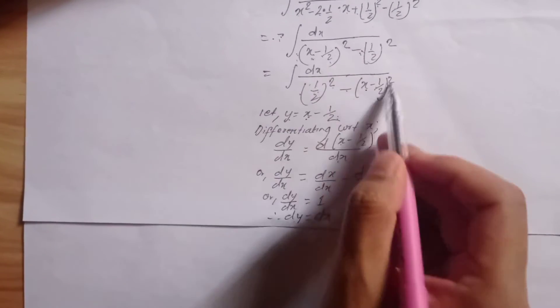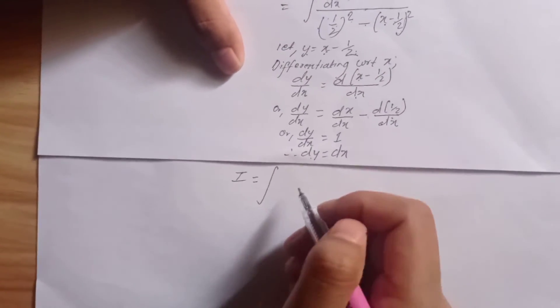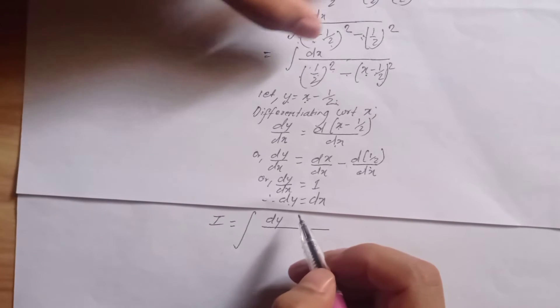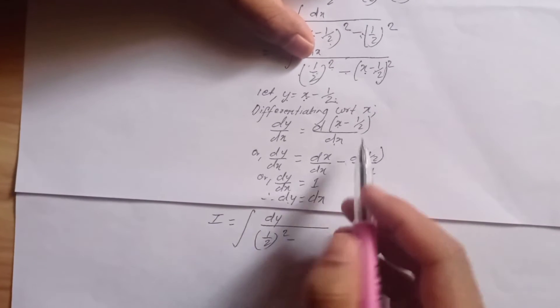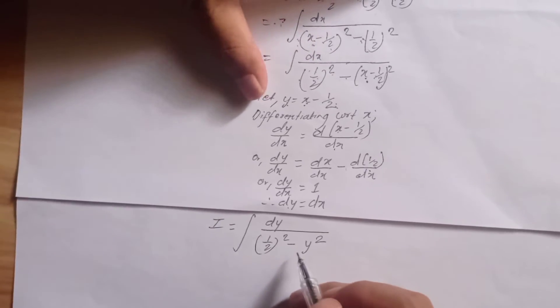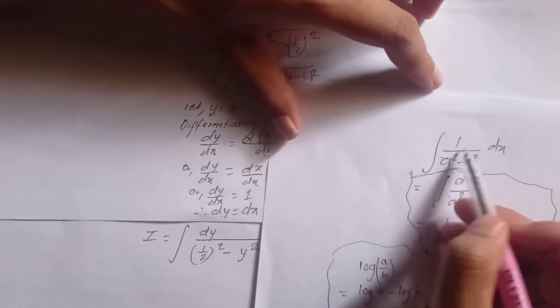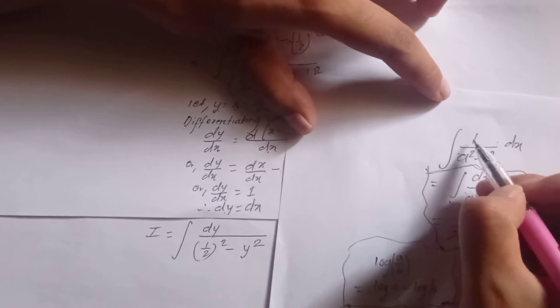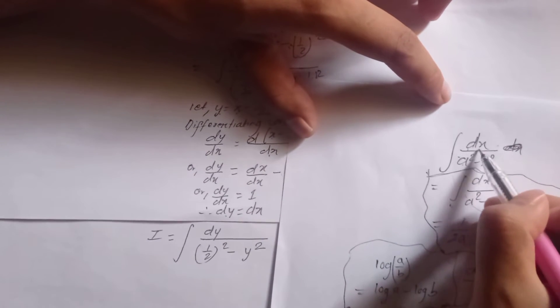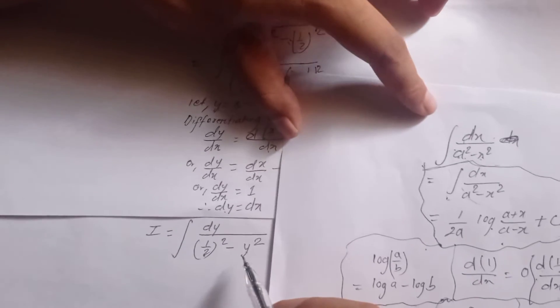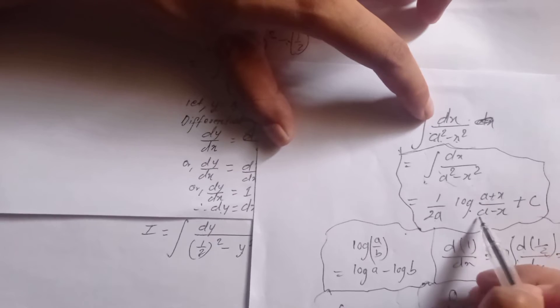So integral dx dy, since dx equals dy, and 1 by 2 whole squared is constant. x minus 1 by 2 whole squared, so y squared substitute there. This is in the form 1 by a squared minus x squared dx. dx is really dy. So this is in the form 1 by 2.